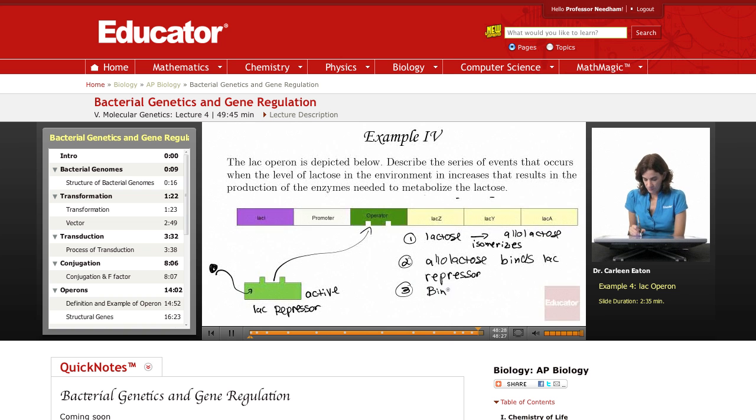Binding converts the lac repressor to its inactive form. Allolactose is an allosteric regulator. It binds to the lac repressor and induces a conformational change that puts it in its inactive form.